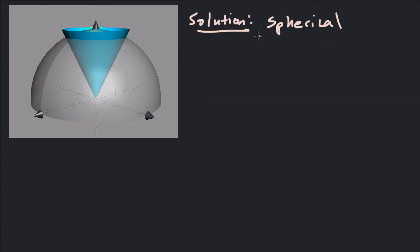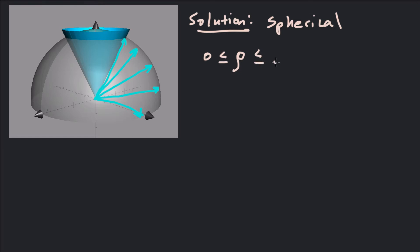Now let's solve this in spherical coordinates. We need bounds for ρ, θ, and φ. ρ goes from the origin out to the sphere, so ρ goes from 0 to square root of 5, regardless of angle. θ goes from 0 to 2π — it's the angle that sweeps around the xy plane.